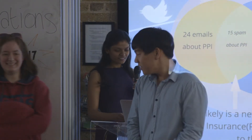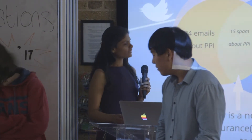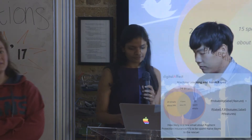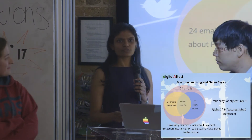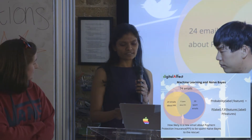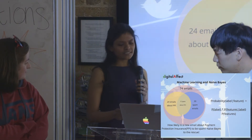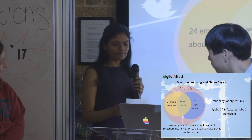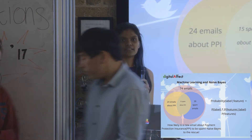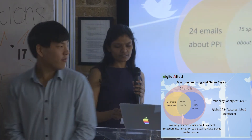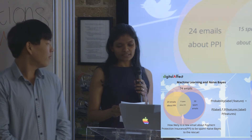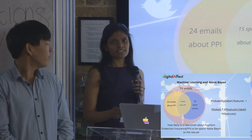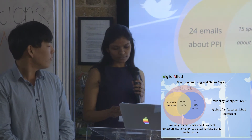As Imogen mentioned, our classifier algorithm classifies tweets into positive and negative. Let's look at a simple example of how a Naive Bayes classifier — which we use — would classify an email as spam or not.